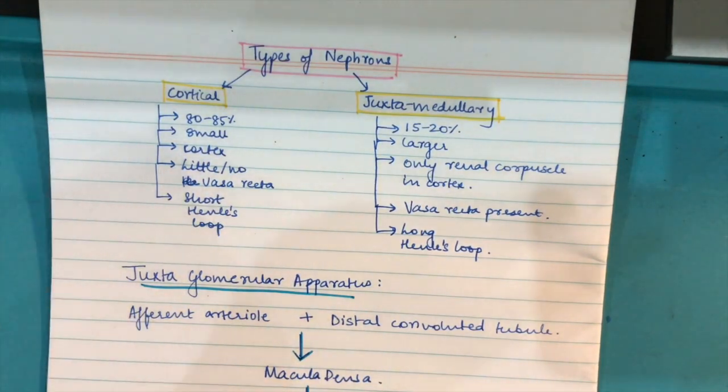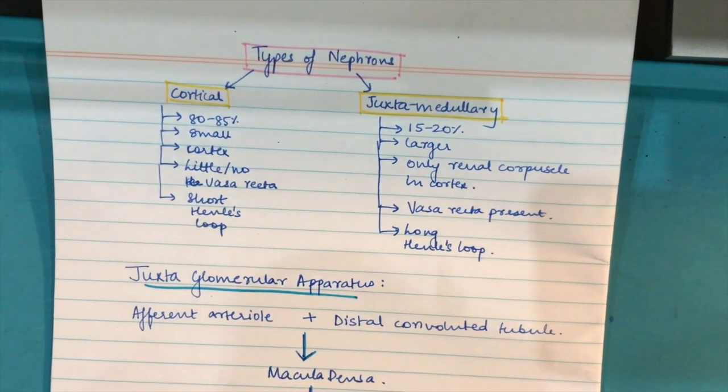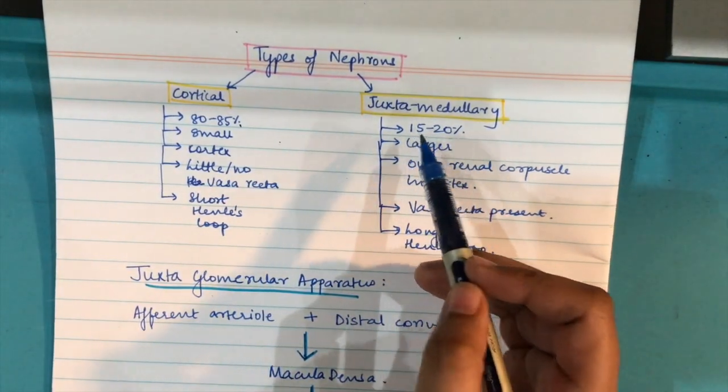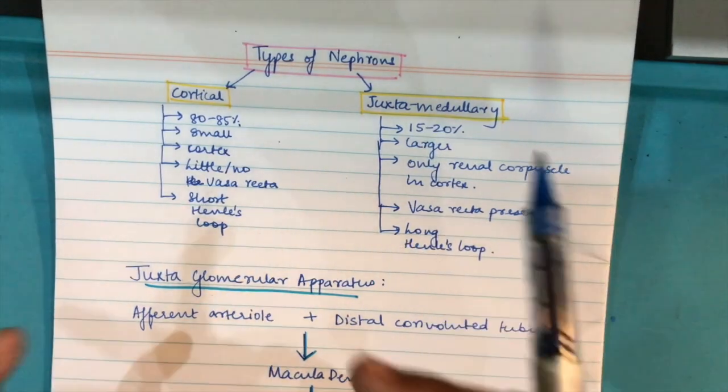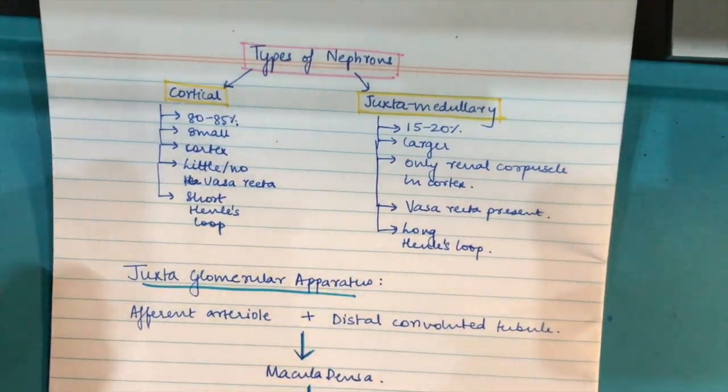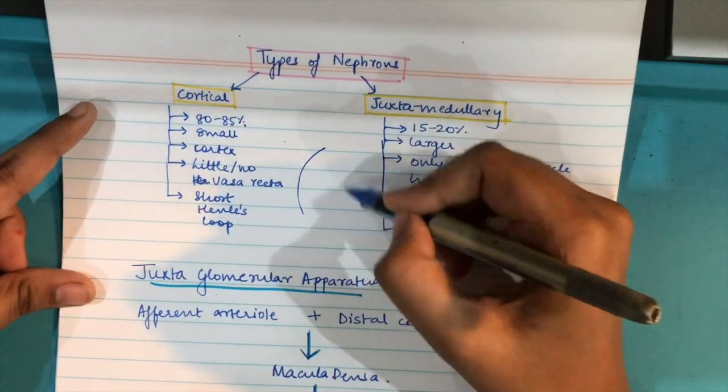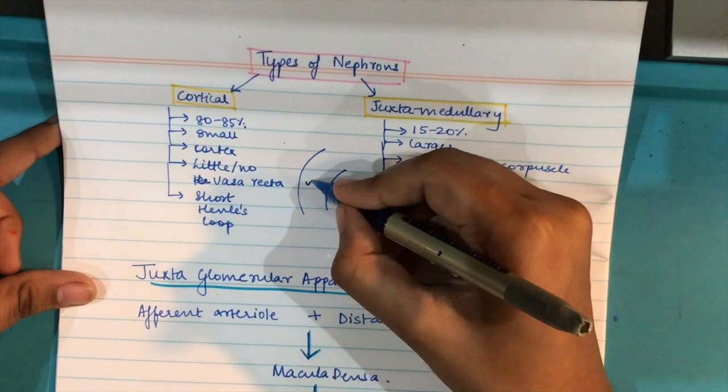There are basically two kinds of nephrons. One is cortical and the other is juxtamedullary. Cortical forms most of the nephrons, that is 80 to 85 percent, and juxtamedullary only 15 to 20 percent. Cortical nephrons are also very small, juxtamedullary are large.